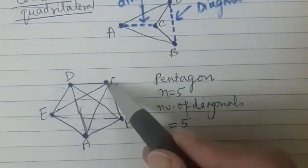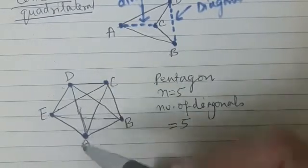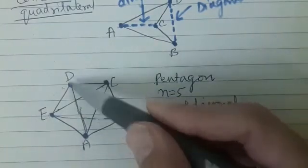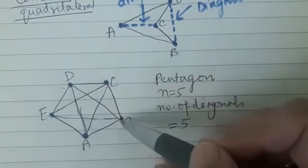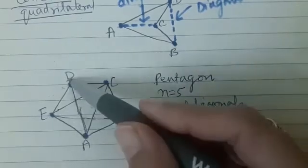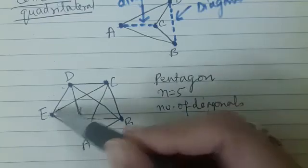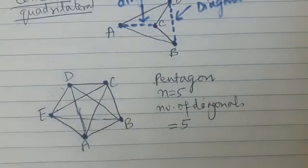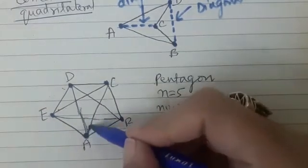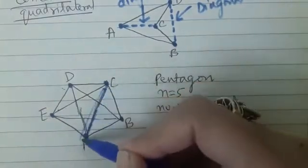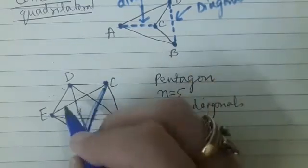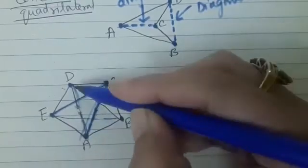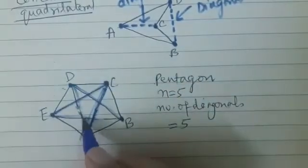Let us count: A-C (or C-A), A-D (or D-A) — that is 1, 2. Then B-E and B-D — that is 3, 4. And E-C — that is 5. So in a pentagon the number of sides is 5 and the number of diagonals is also 5.